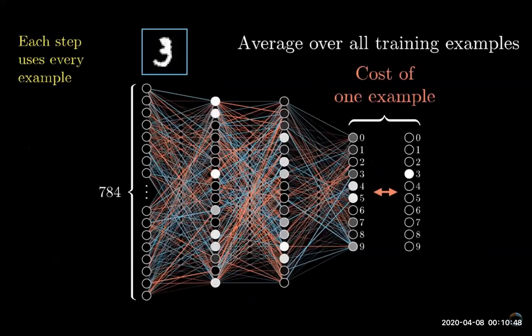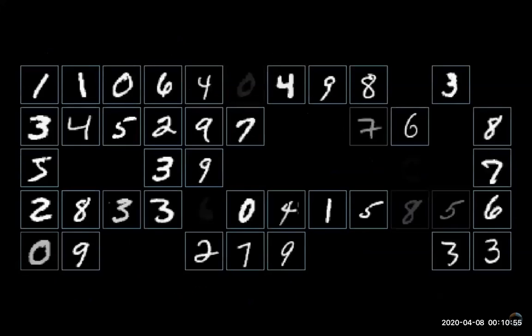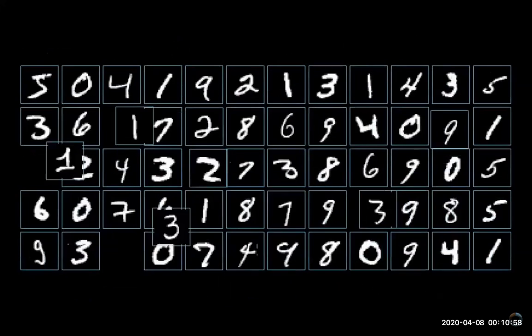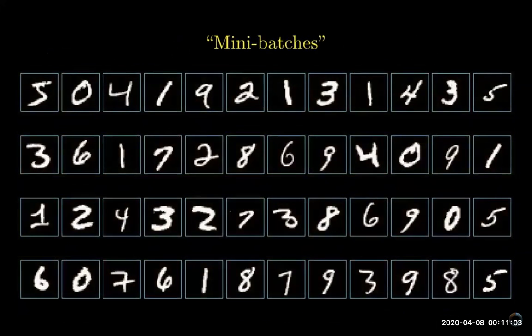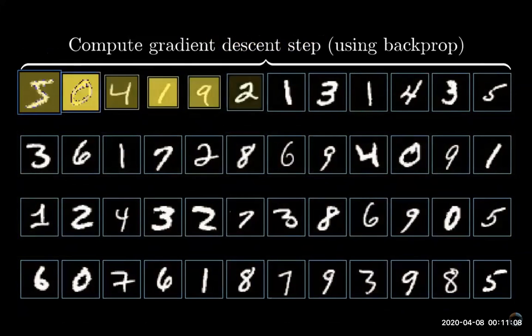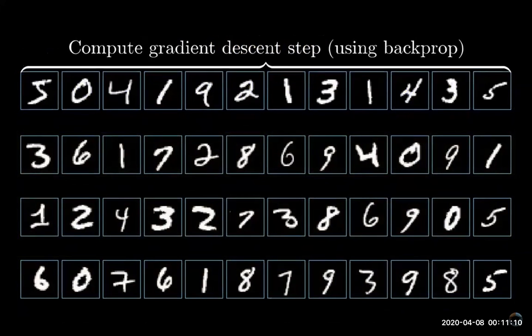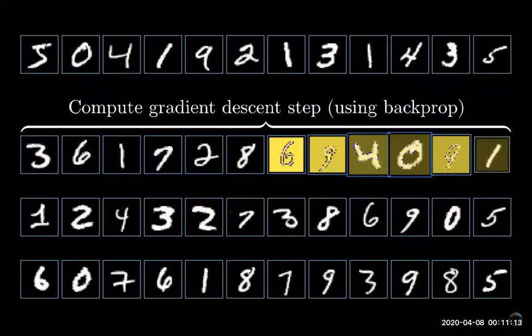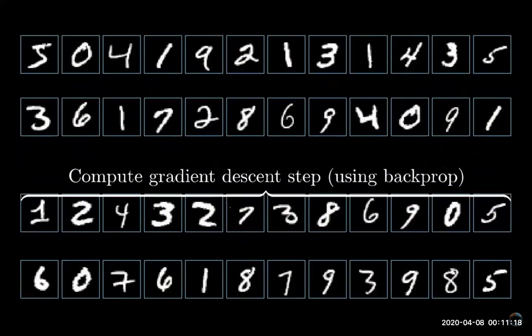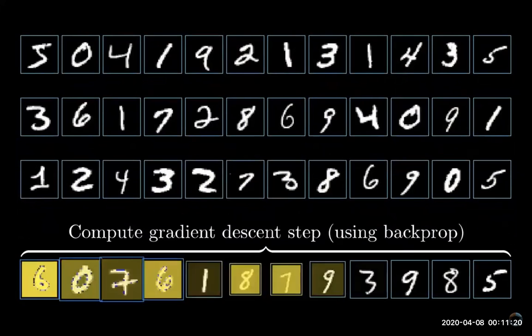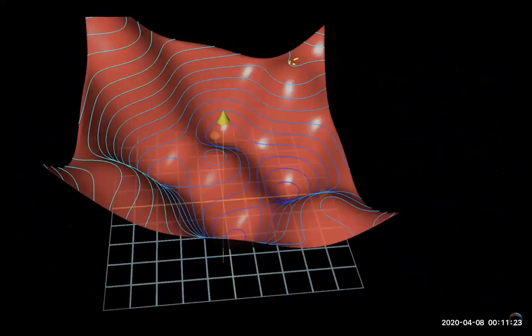By the way, in practice it takes computers an extremely long time to add up the influence of every single training example every single gradient descent step. So here's what's commonly done instead: you randomly shuffle your training data and then divide it into a whole bunch of mini batches, let's say each one having a hundred training examples. Then you compute a step according to the mini batch. It's not going to be the actual gradient of the cost function which depends on all of the training data, but each mini batch does give you a pretty good approximation.